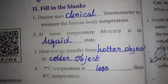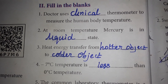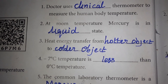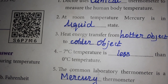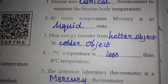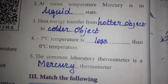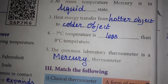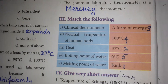Next is the Fill in the Blanks section. A doctor uses a clinical thermometer to measure the human body temperature. Heat energy transfers from a hotter object to a colder object. Minus seven degrees centigrade temperature is less than zero degrees temperature. The common laboratory thermometer is the mercury thermometer.